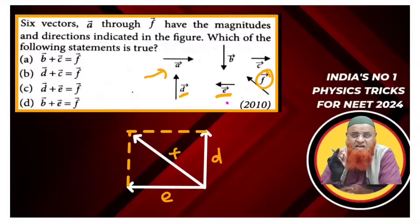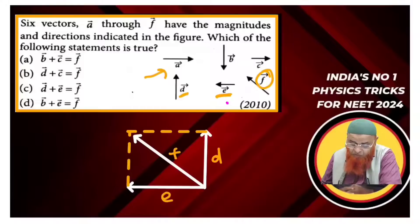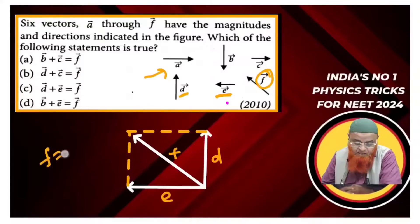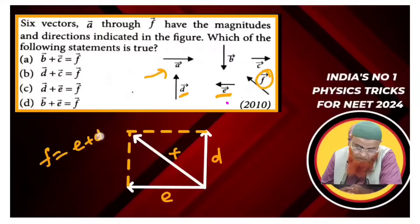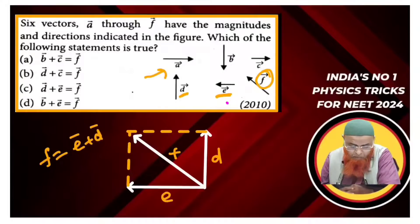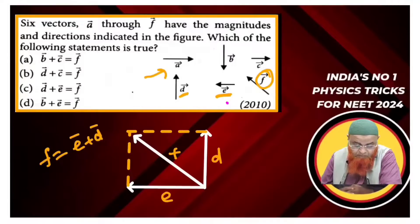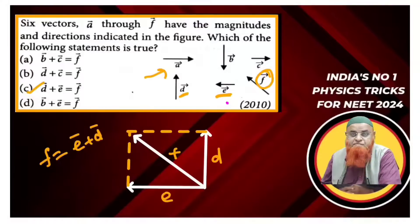These three vectors D, E, and F resemble exactly a parallelogram, with F taken as the resultant. Therefore, F = E + D, and the correct option is C.